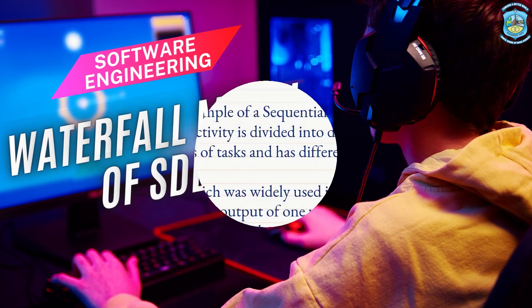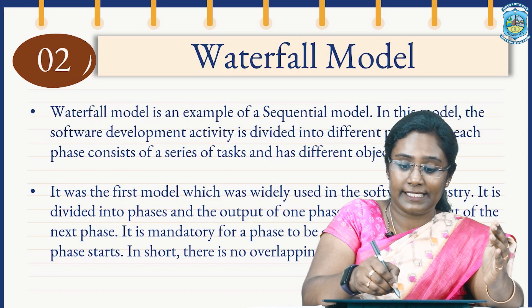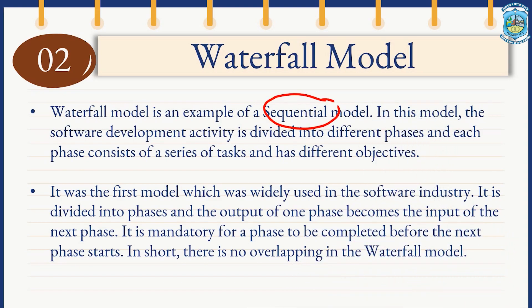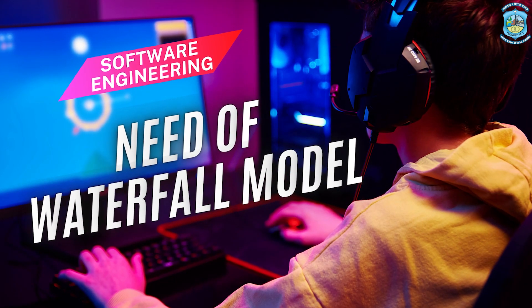Waterfall model is an example of a sequential model. In this model, the software development activities are divided into different phases, and each phase consists of a series of activities and has a different objective. This is the first model which was widely used in the software industry. It is divided into phases, and the output of one phase becomes the input of the next phase. It is mandatory for a phase to be completed before the next phase starts. There is no overlapping of phases in the waterfall model.